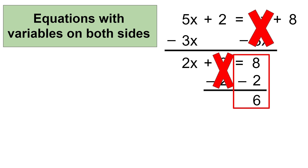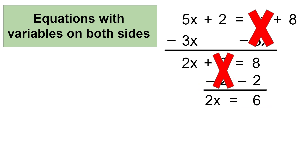Now let's bring down the remaining parts of the equation: 2x. So now we have the equation 2x equals 6. We only have to remove one more thing to get the variable x by itself, and that is the coefficient 2. To remove terms, we need to use the opposite operation. And as you can see, 2 is being multiplied by x, and the opposite of multiplication is division. So to remove 2 on the left side, we need to divide by 2 on the left side.